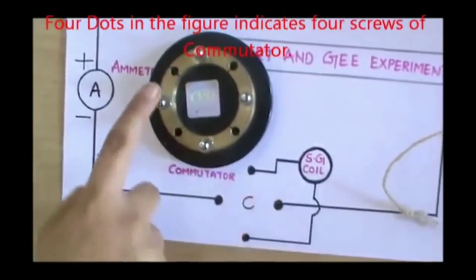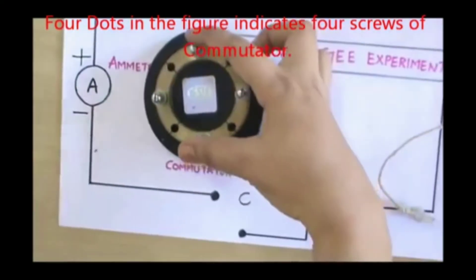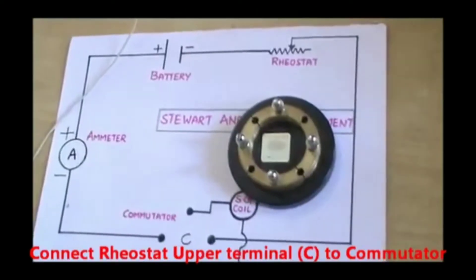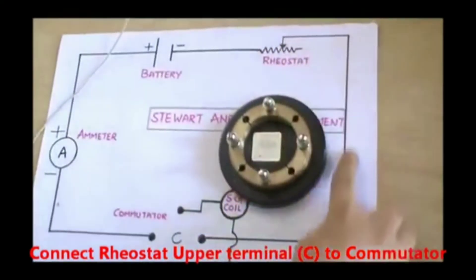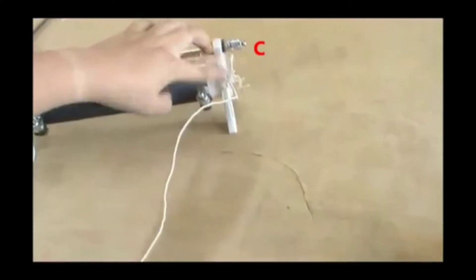This is the commutator. Four dots in the figure indicate four screws of the commutator. Now we will connect rheostat upper terminal C to the commutator.